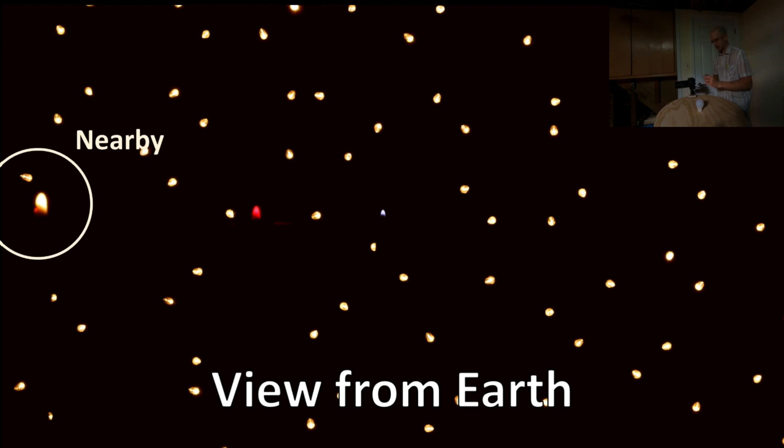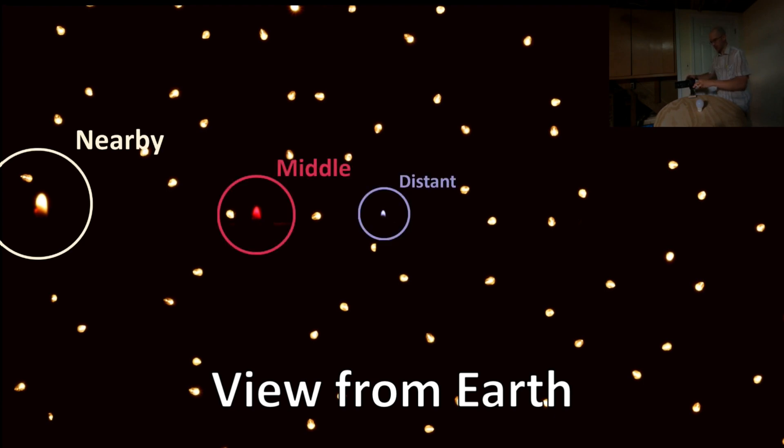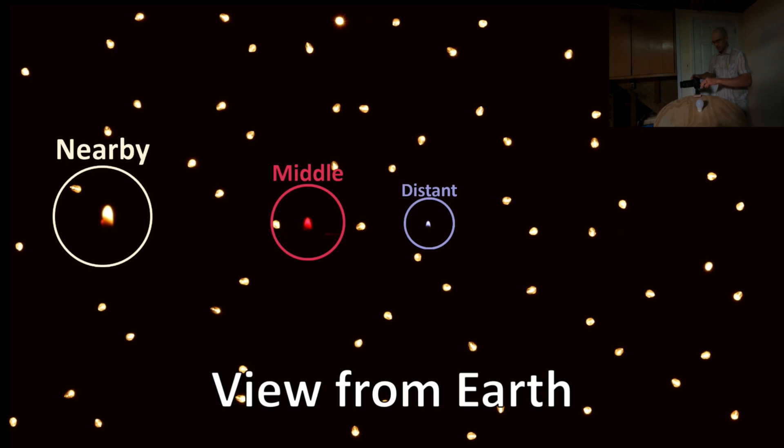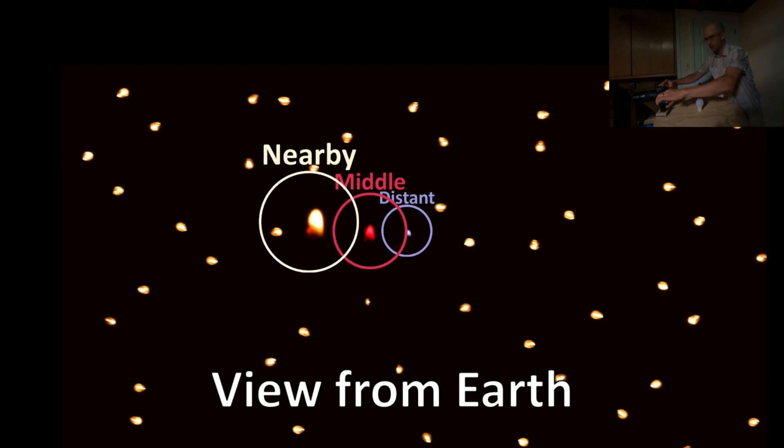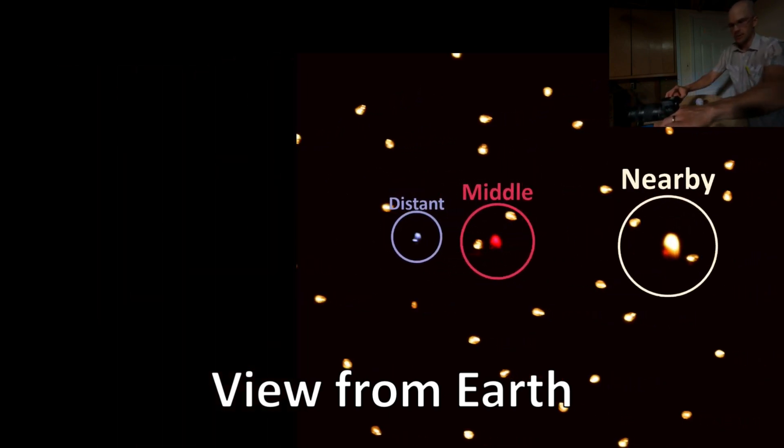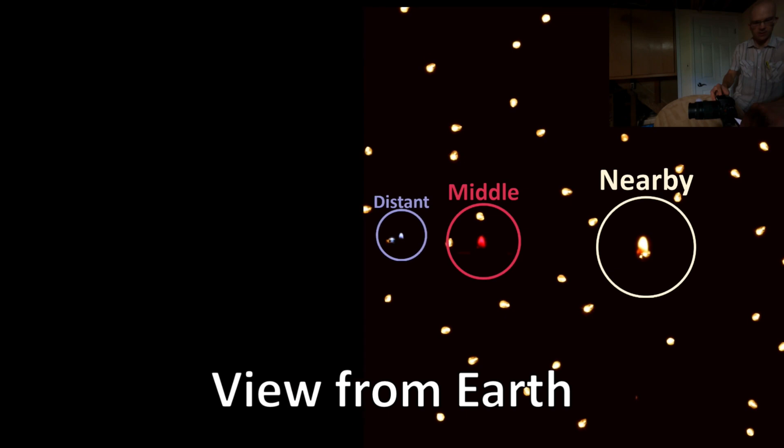This one is the closest candle, this one's in the middle, and that one's the farthest away. So I'm going to rotate the Earth around the sun from one end of its orbit to another, looking at those candles as they appear to move against the background stars.